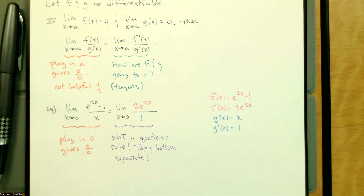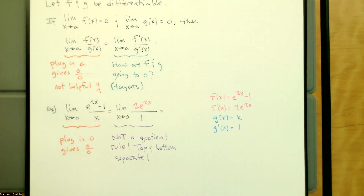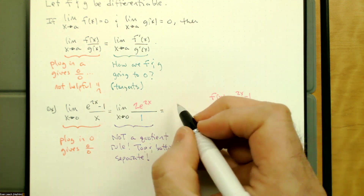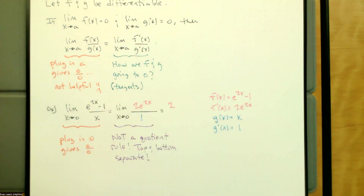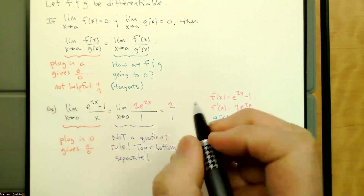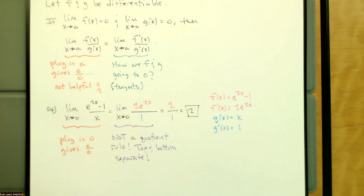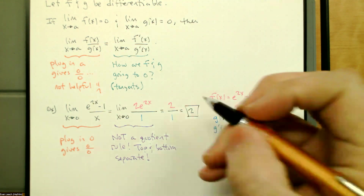Now when we plug in zero: in the top we get 2e^(2·0), which is 2, and in the denominator we get 1 — so we get 2 over 1. Now we can just plug in zero: 2e^0 is 2, and 1 is 1. Now that we're looking at the derivatives, the part that was causing a problem — getting zero over zero — has gone away, and now we can plug in zero to the top and bottom.